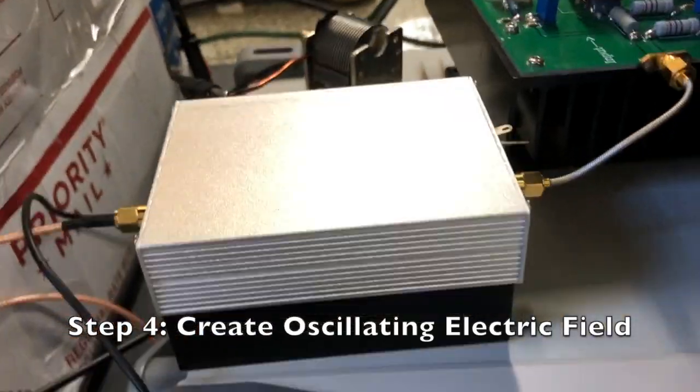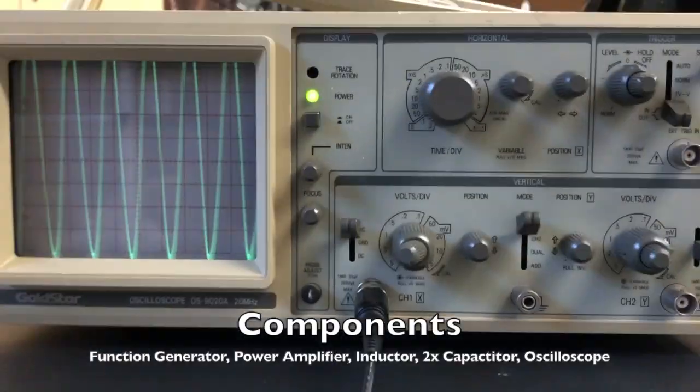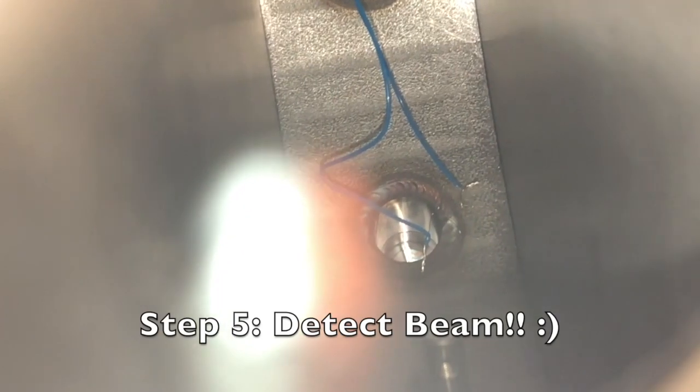Step four: the RF system. It employs the parts you see here to accelerate the beam to higher energies. Here is a glorious beam of protons.